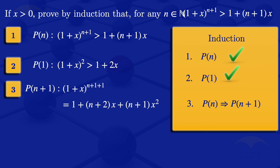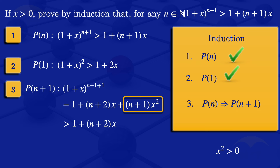Since x is greater than 0, x squared is greater than 0, and therefore n plus 1 multiplied by x squared is greater than 0. So this whole expression is greater than 1 plus n plus 2 multiplied by x, since we are dropping the positive term. Therefore, 1 plus x to the power n plus 1 plus 1 is greater than 1 plus n plus 2 multiplied by x, which means P(n+1) is true whenever P(n) is true.